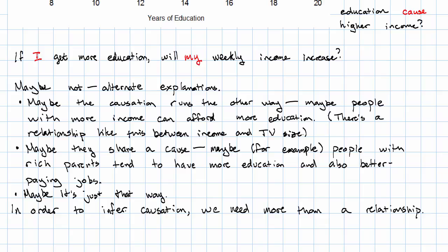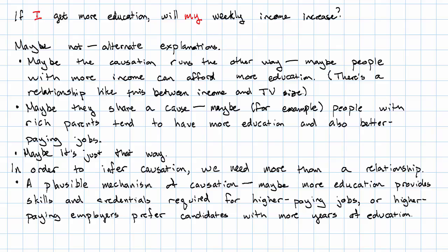In order to infer causation, we need more than an observed relationship. What do we need? The first thing we need in order to infer causation is a plausible mechanism of causation — some way that the one thing could possibly cause the other. In the example we're working on, a couple of plausible mechanisms: maybe more education provides the skills or credentials required for higher paying jobs, or maybe higher paying employers prefer candidates with more years of education. But just because you have a plausible mechanism for causation still doesn't mean it's there.